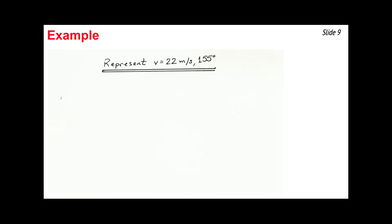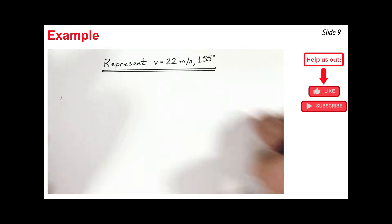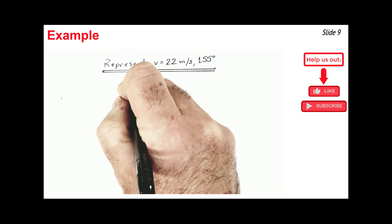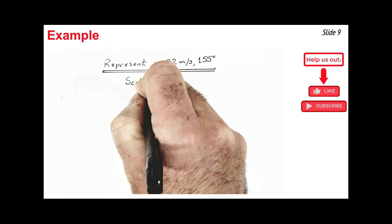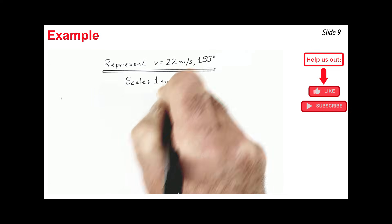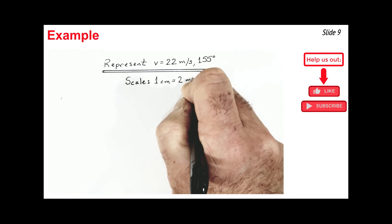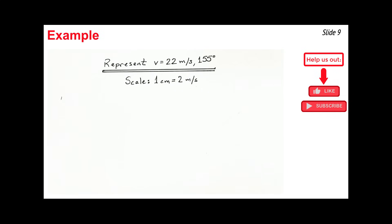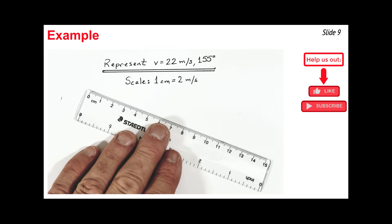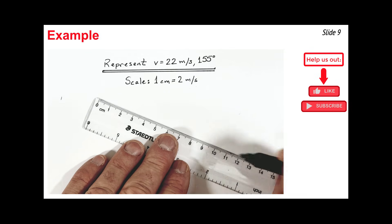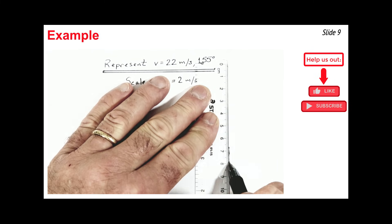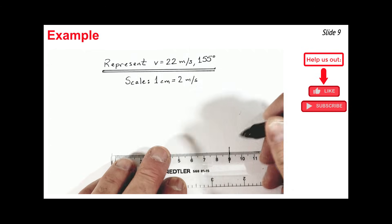Let's do an example. I want to represent a velocity vector with a magnitude of 22 meters per second and a direction of 155 degrees in this allotted space. I'll begin by deciding on a scale: 1 centimeter equals 2 meters per second. This allows me to draw an 11-centimeter-long velocity vector that fits inside the allotted space. I decide on a starting point at the bottom right side of my allotted space and mark a cross there — that's where the tail of my vector will start.